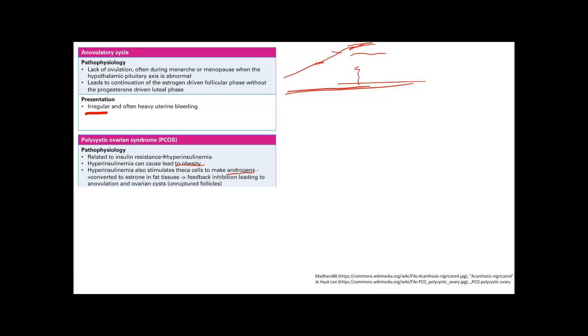So these androgens are converted to estrone in fat tissues. And so this leads to feedback inhibition. Remember, the estrogen goes up and blocks the GnRH, blocks FSH and LH. So now you don't have ovulation and you get ovarian cysts.